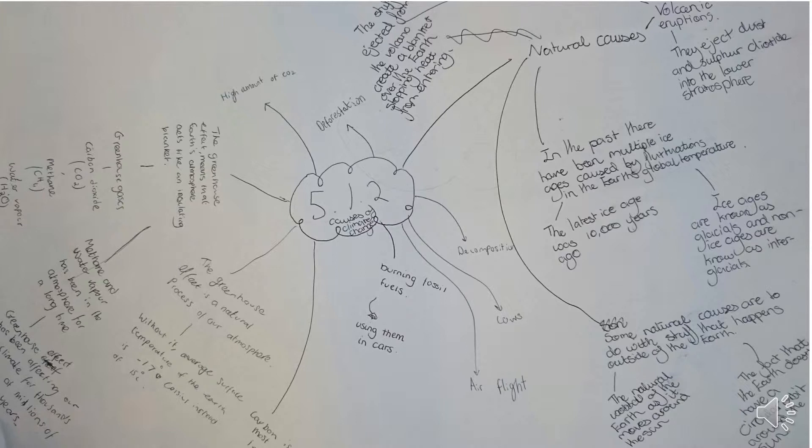Through photosynthesis, the plant locks in carbon and uses it for its own life processes and also as the building blocks for the plant itself. You can see on the sheets a variety of different notes covering these topics.